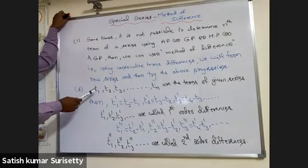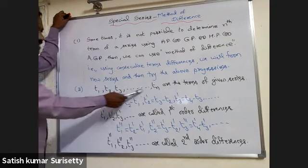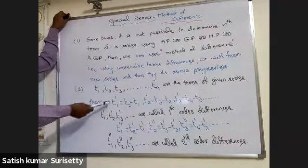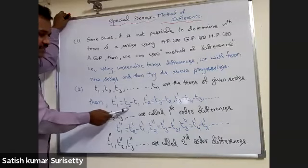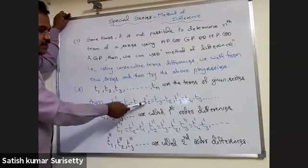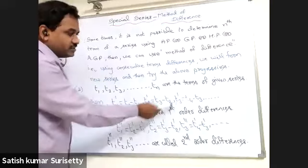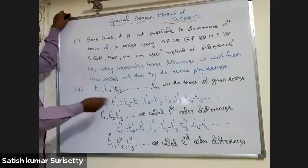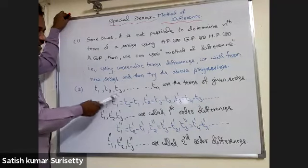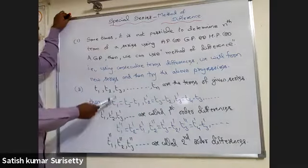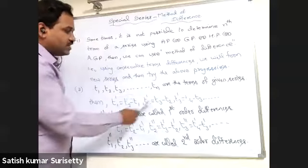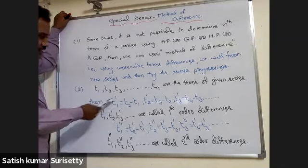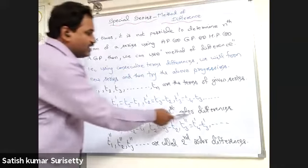If t1, t2, t3, ... tn are the terms of the given series, we define the first-order differences as: t1' = t2 − t1, t2' = t3 − t2, t3' = t4 − t3, and so on. The new series formed by the terms t1', t2', t3', ... are checked to see whether they form any progression. These new terms are called the first-order differences.